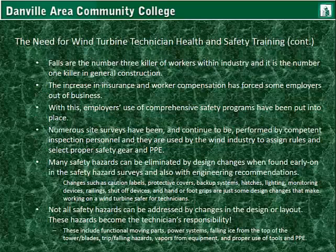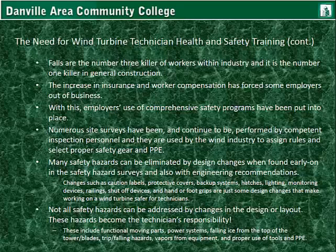Falls are the number three killer of workers within industry and the number one killer in general construction. The increase in insurance and worker compensation has forced some employers out of business. With this, employers' use of comprehensive safety programs have been put into place. Numerous site surveys have been and continue to be performed by competent inspection personnel and are used by the wind industry to assign rules and select proper safety gear and PPE. Many safety hazards can be eliminated by design changes when found early on in safety hazard surveys and with engineering recommendations. Changes such as caution labels, protective covers, backup systems, hatches, lighting, monitoring devices, railings, shutoff devices, and hand or foot grips are just some design changes that make working on a wind turbine safer for technicians.